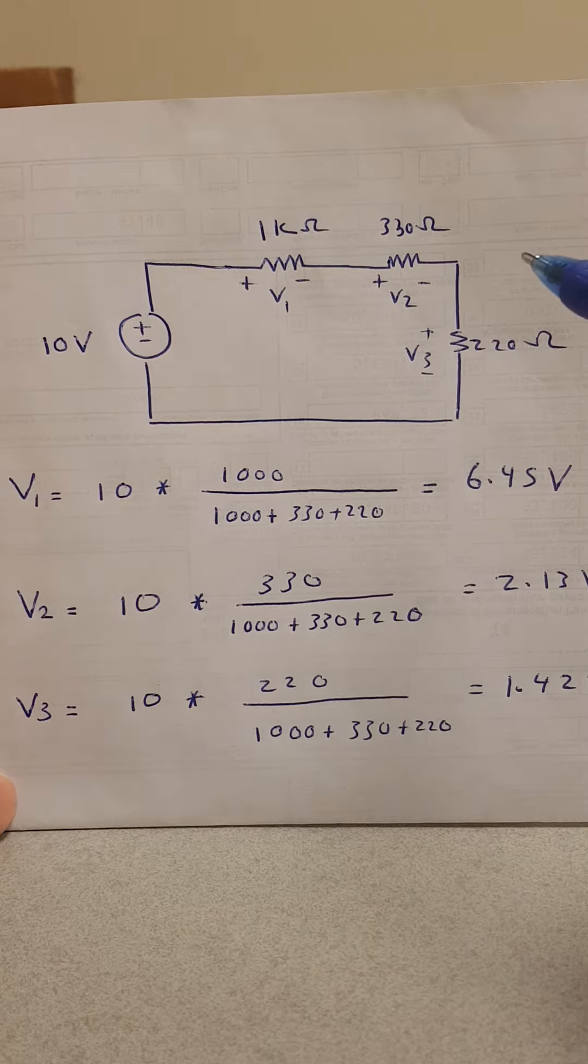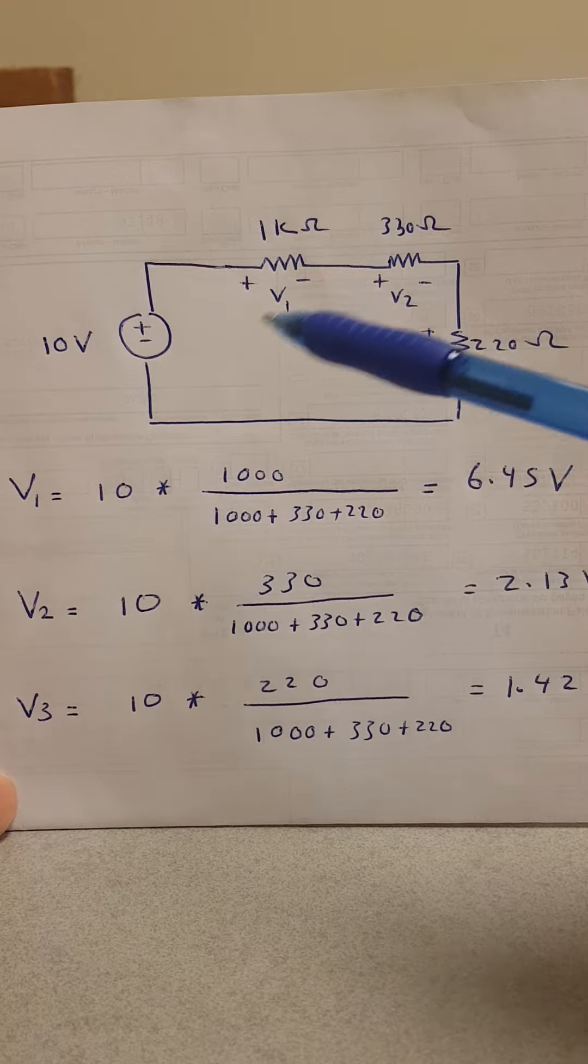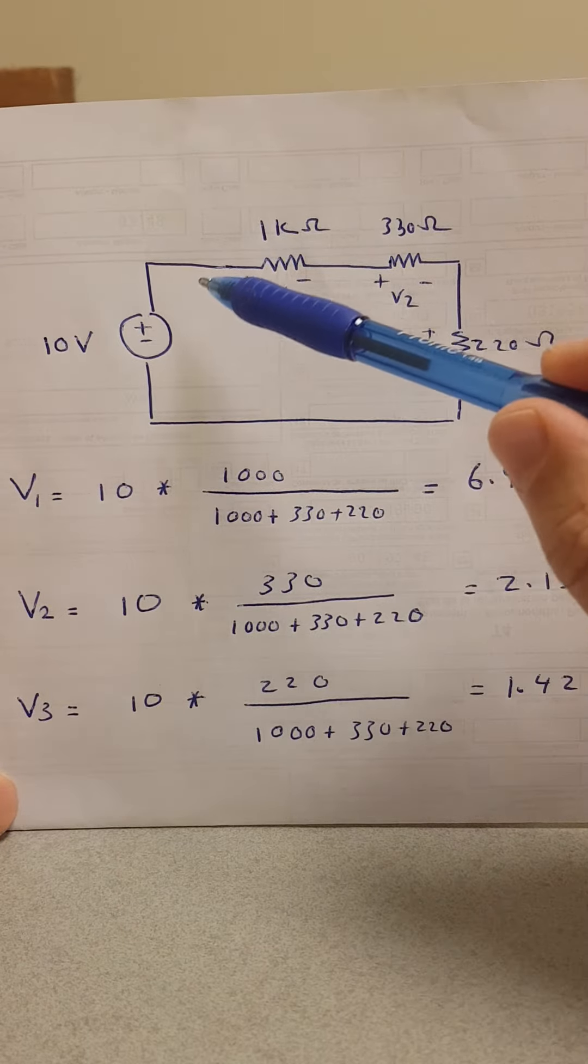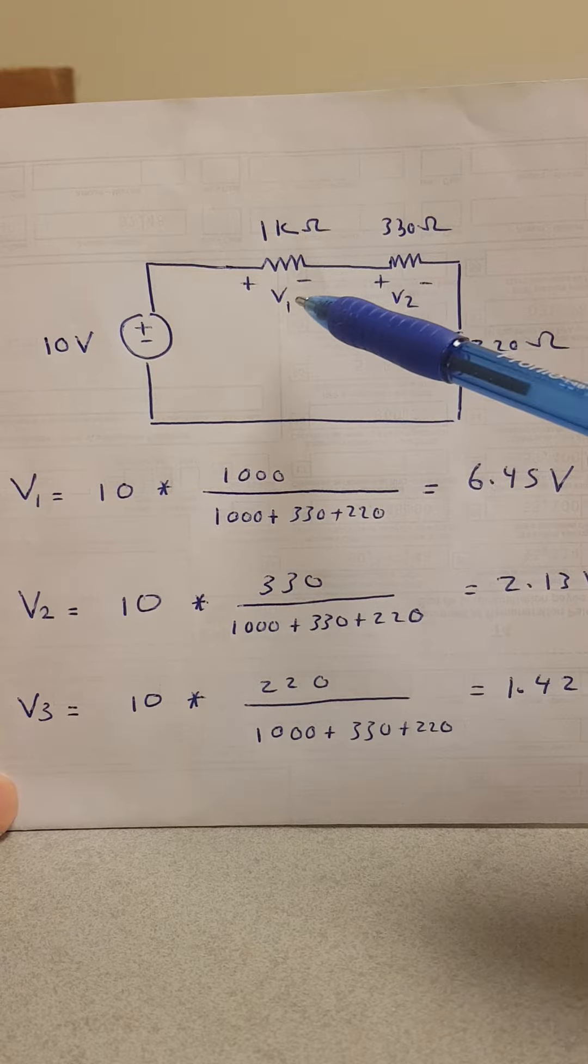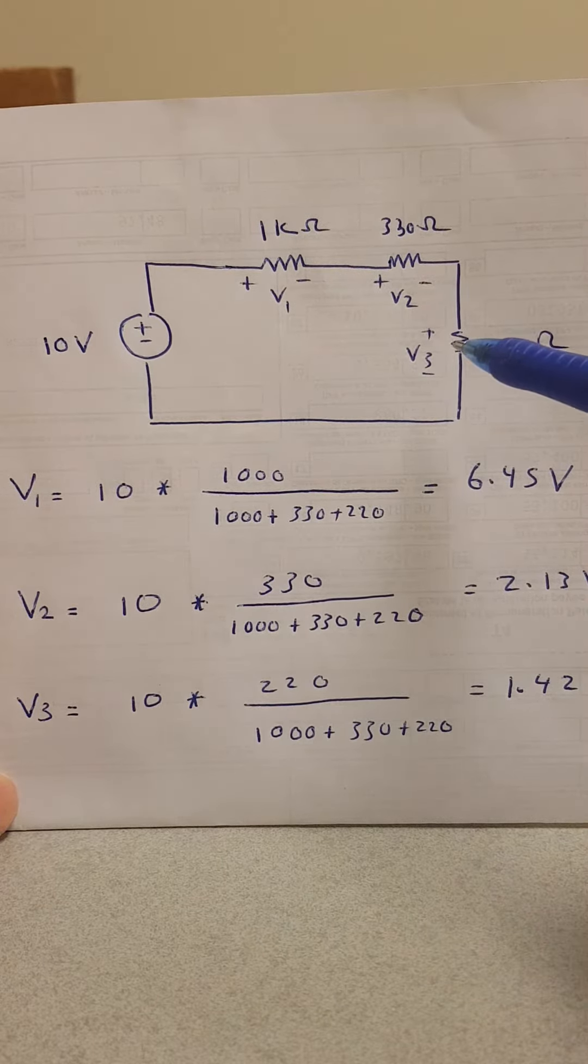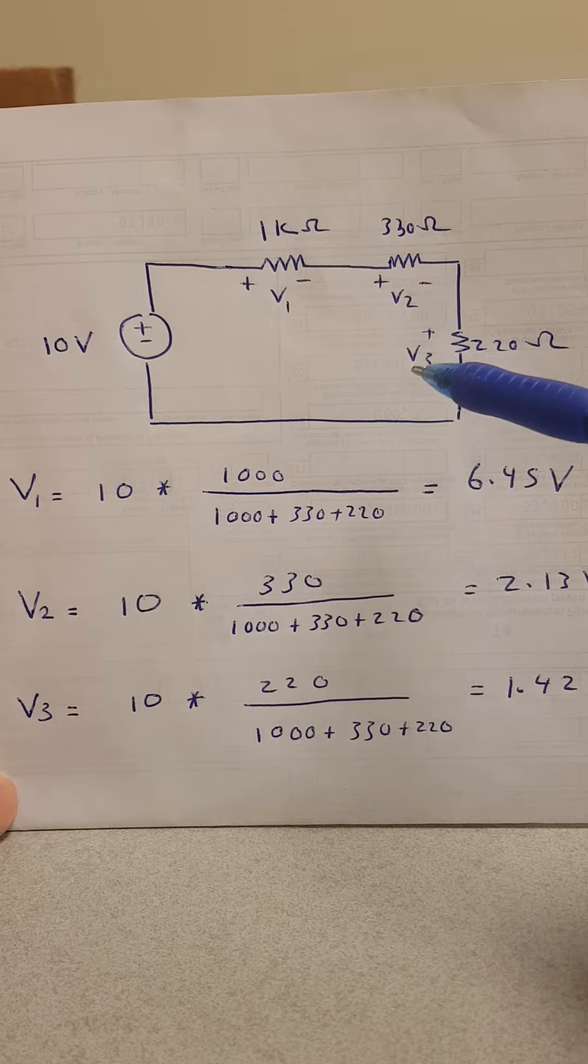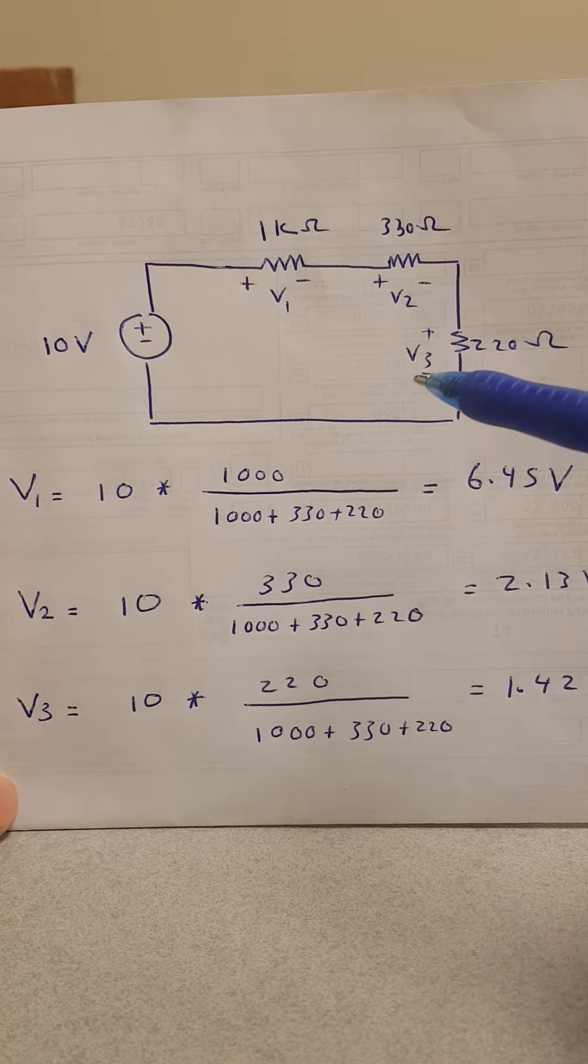In this video we will learn about a shortcut called voltage division. Voltage division applies when you have a voltage source in series with different resistors. So here if you want to find v1, v2, or v3, I don't need to apply KVL and Ohm's law to find these voltages as we did before.